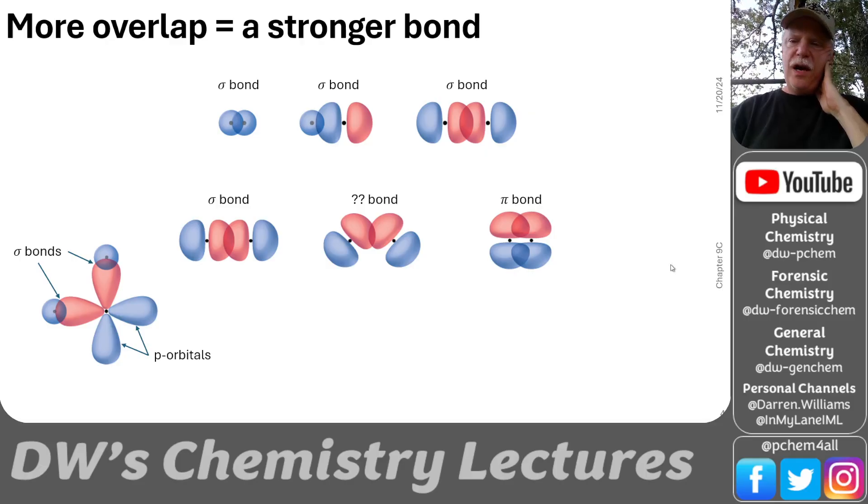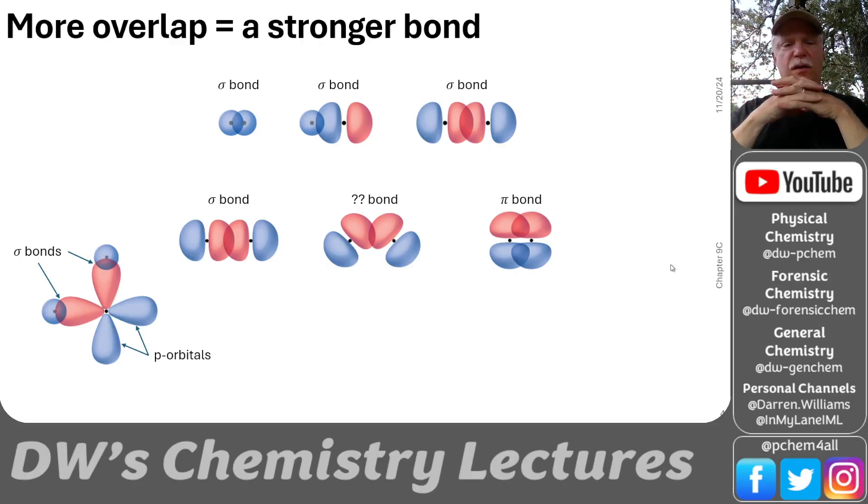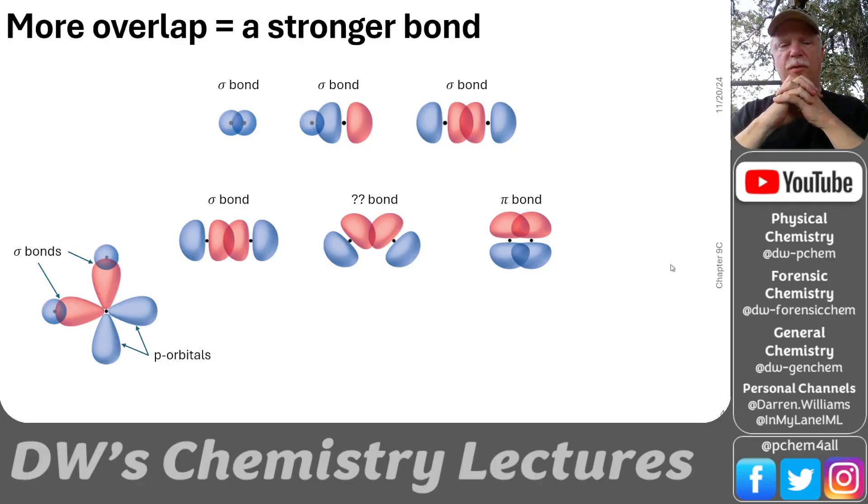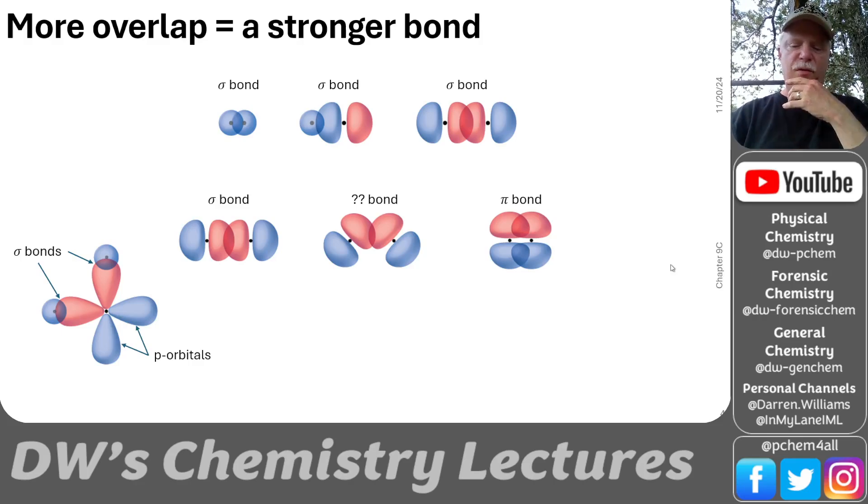The p orbitals can interact to make sigma bonds with s orbitals. But notice how the p orbitals in an atom, these atomic orbitals, are all at 90 degrees to each other. And so that can kind of pose a problem. If the p orbitals are at 90 degrees, do all of our bonds and all of our molecules have to be at 90 degrees? And the answer to that is no. And we'll show today why that answer is no.